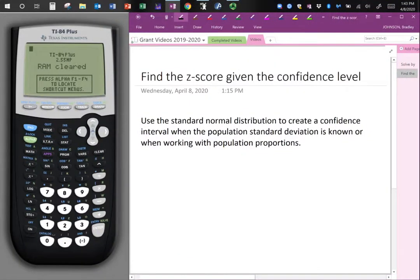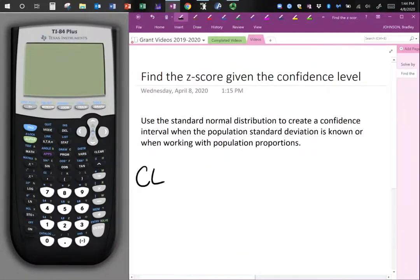Hello, I will be demonstrating finding the z-scores when you're given a confidence level. A confidence level I will denote by CL for confidence level. Now with the confidence levels, we are going to use the standard normal distribution, what I have here.